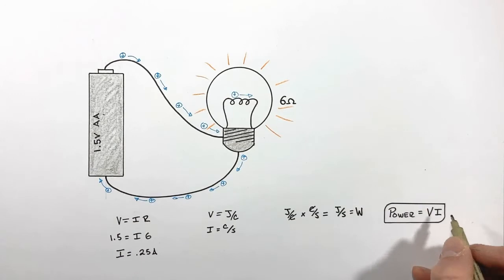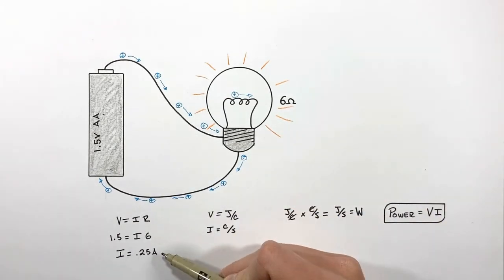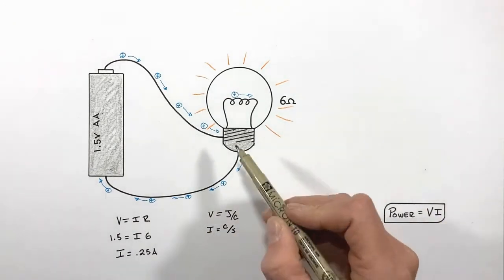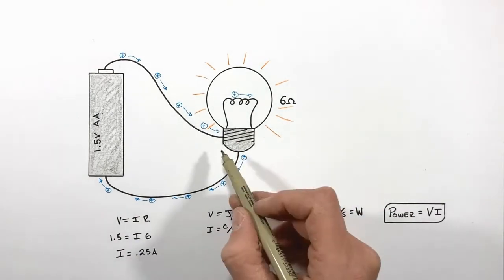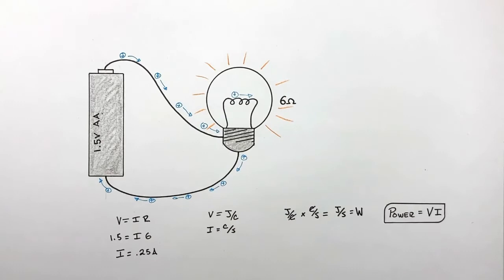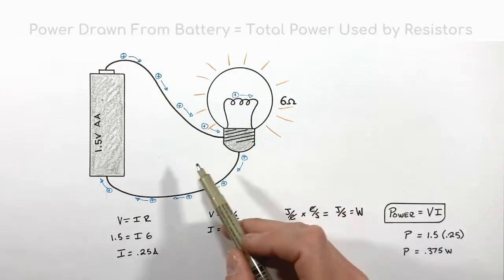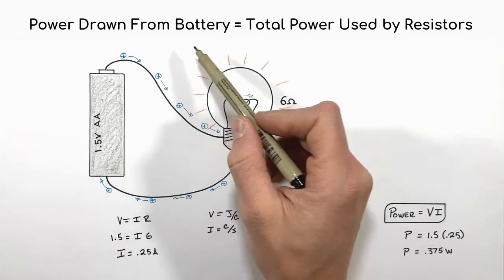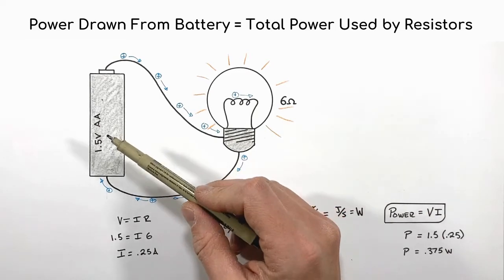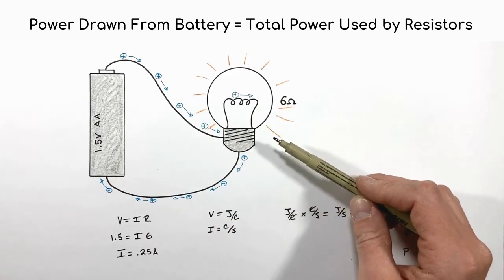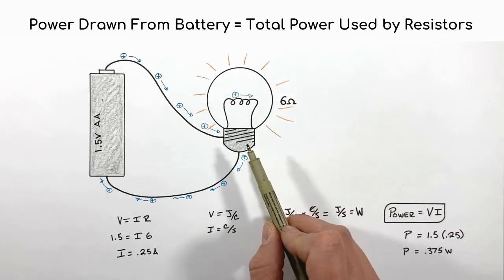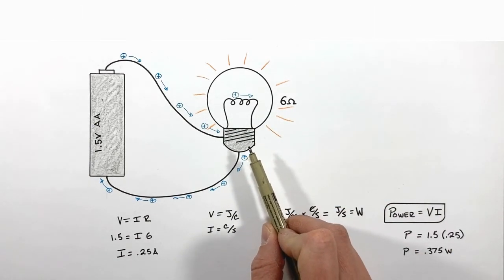And since power is V times I, since the current through the bulb is 0.25 amps and the voltage across this light bulb is 1.5 volts, we get the power drawn by this bulb is 0.375 watts. Now it's important to point out that the power supplied by the battery is always going to be equal to the total power drawn by all of the resistors combined.